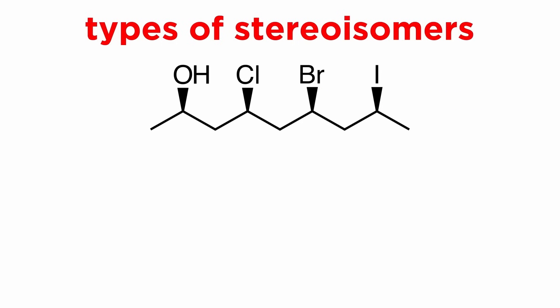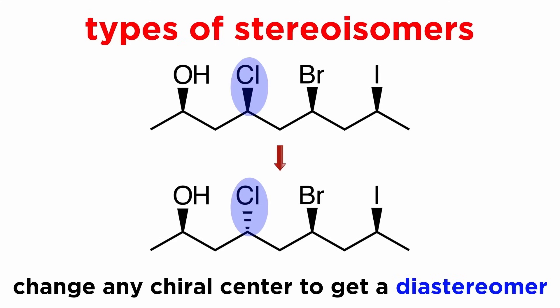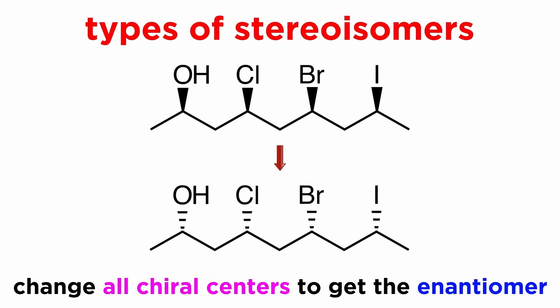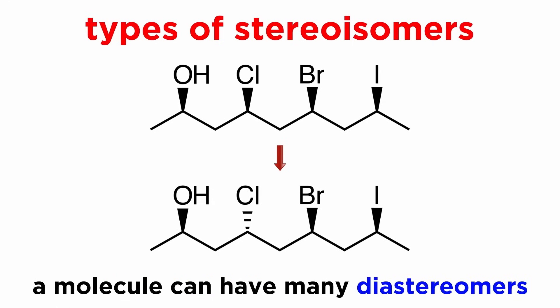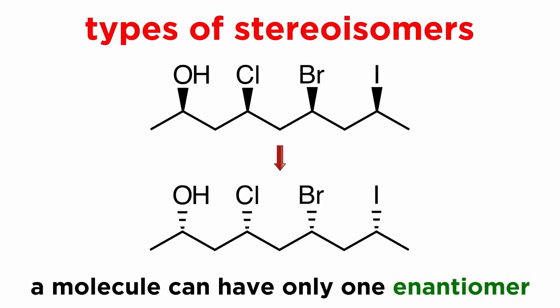Looking at this example with four different groups on wedge bonds, changing the configuration of any one of these chiral centers will result in a different diastereomer, or any two chiral centers, or any three. But only if we invert every single stereocenter will we get the enantiomer. In other words, a molecule can have many many diastereomers, but it will only have one enantiomer.